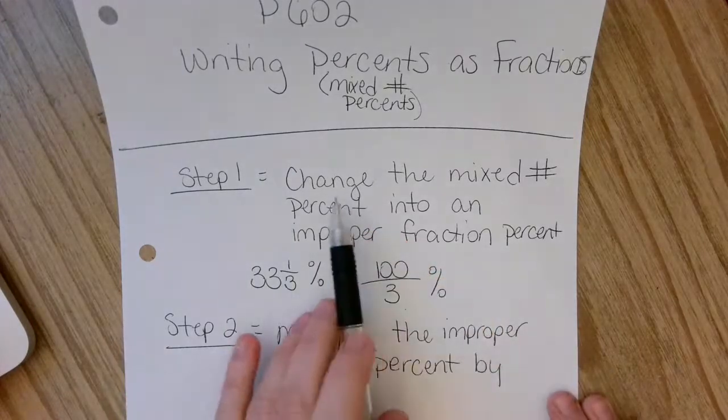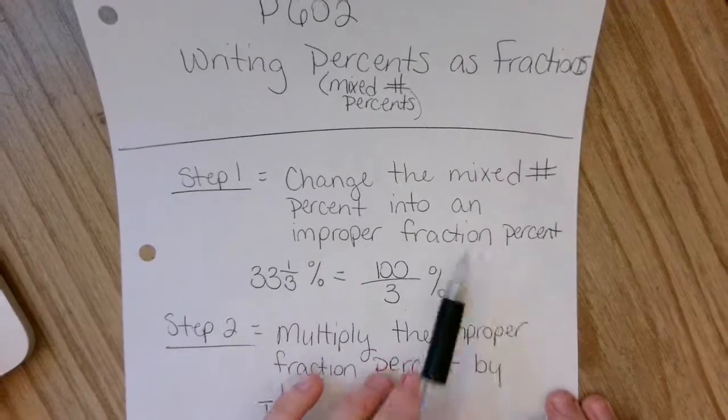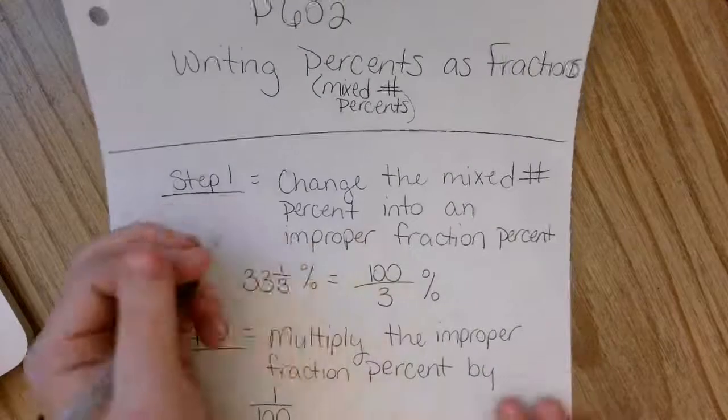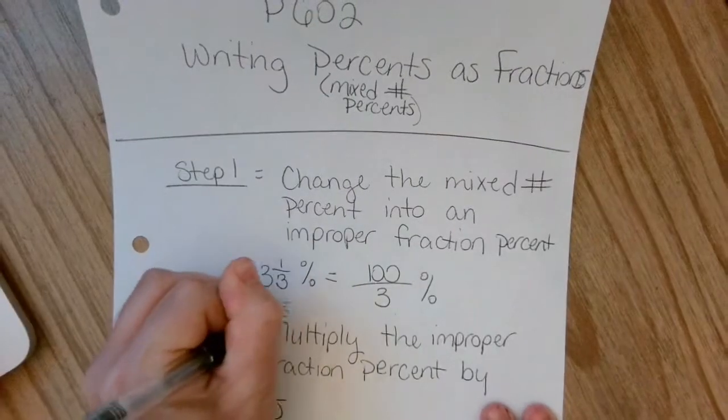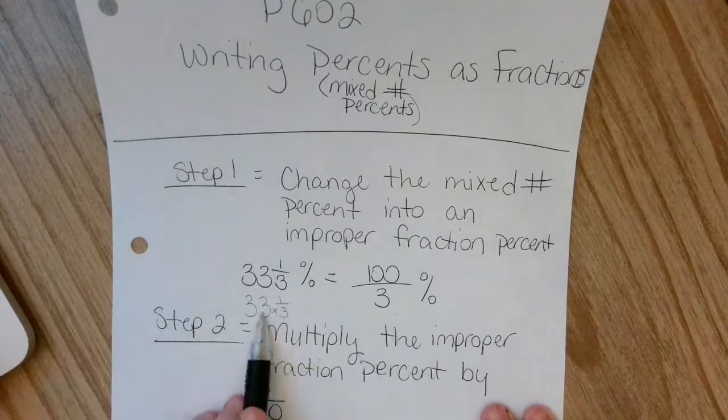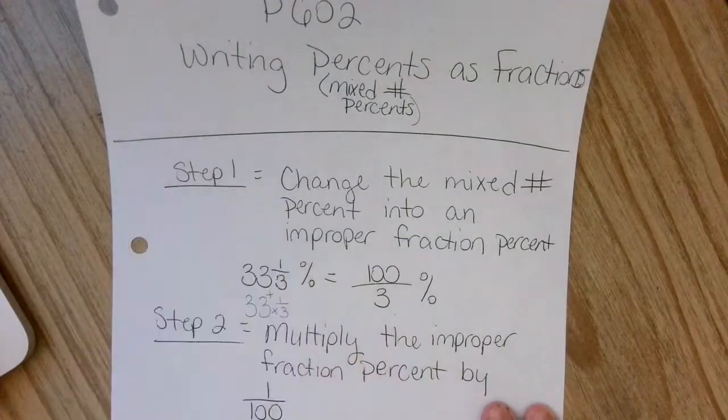So the first thing you're going to do is change the mixed number percent into an improper fraction percent. So if you remember, we have to do the 33 times the denominator and then plus the 1.